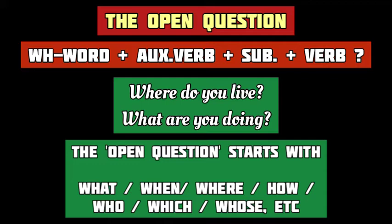An open question always starts with a WH word, then comes the helping verb, then the subject of the sentence, and finally the principal verb and other words. Moreover, an open question cannot be answered in yes or no. For example, 'Where do you live?' This open interrogative sentence starts with the WH word 'where', then comes the helping verb 'do', then the subject 'you', followed by the principal verb 'live'. To answer this question, you have to mention the name of the place where you live. You cannot answer this question in yes or no.